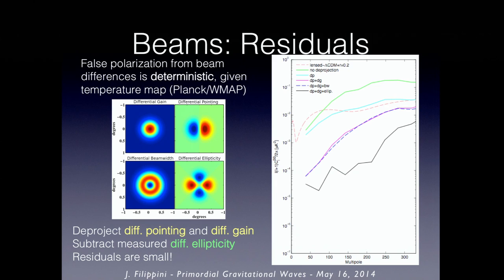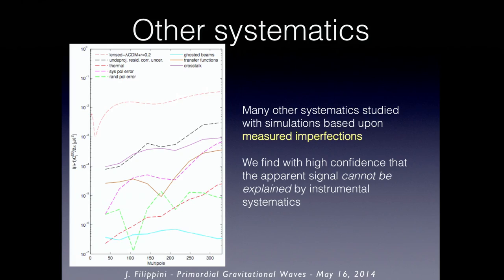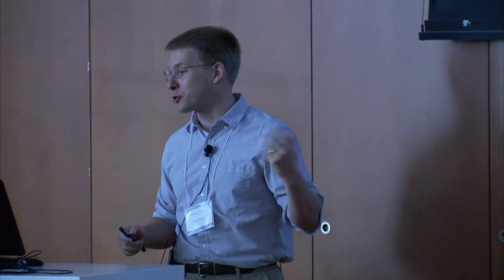Other systematics — measured imperfections such as temperature drifts in the focal plane, polarization angle miscalibrations, crosstalk, finite time response of detectors — all have been assessed, and the residuals are really tiny. Between our scan strategy and our analysis techniques, these should not contribute any significant amount to what we see. The signal cannot be explained by instrumental systematics.